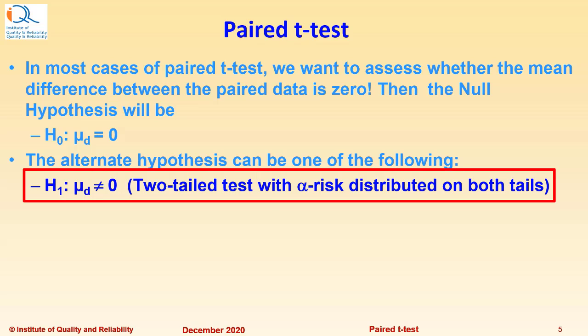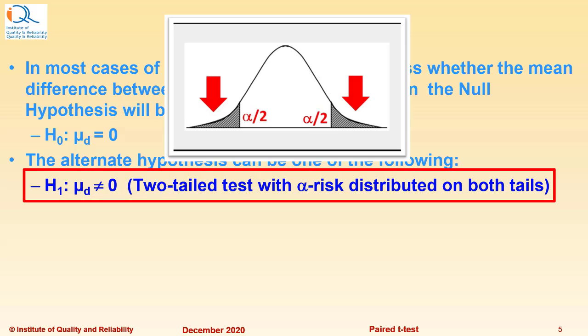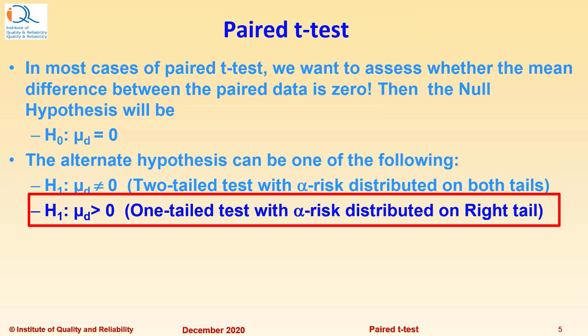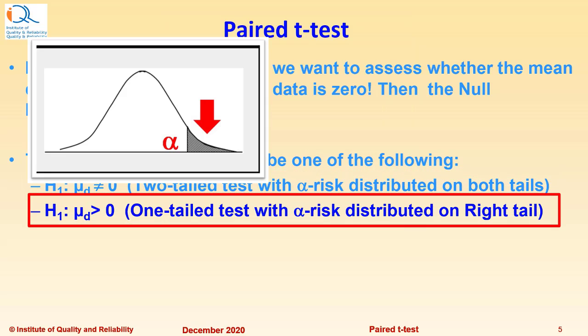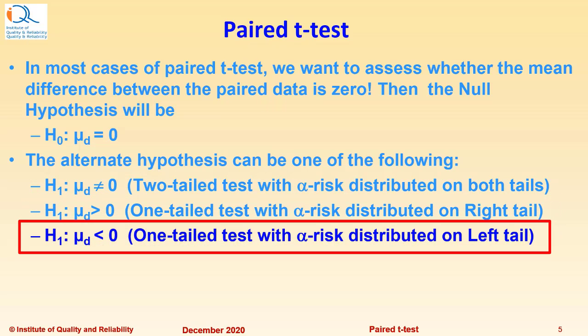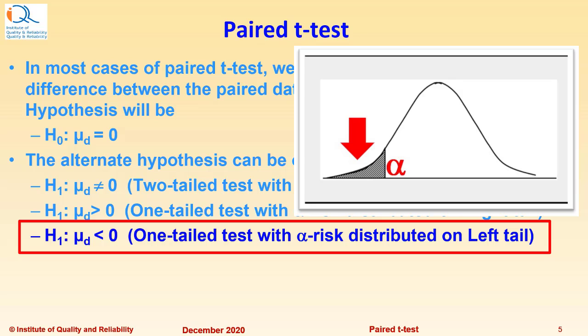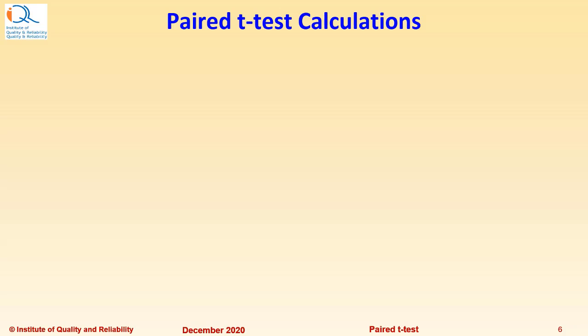H₁: μd ≠ 0, a two-tail test with α-risk distributed on both tails. H₁: μd > 0, one-tail test with α-risk distributed on right tail. Or μd < 0, one-tail test with α-risk distributed on left tail.